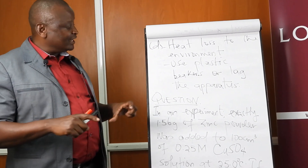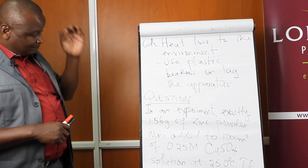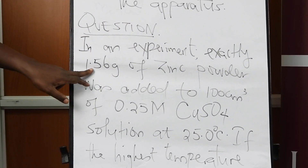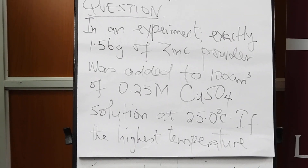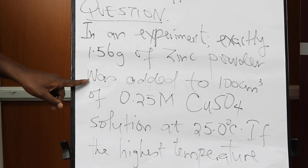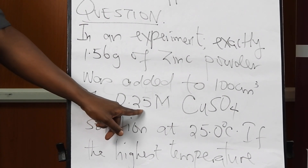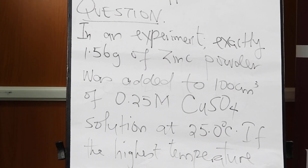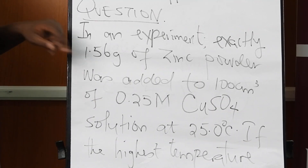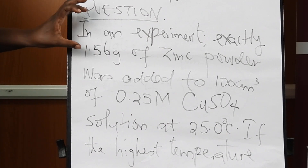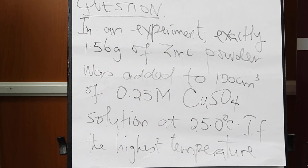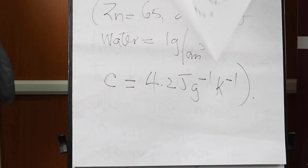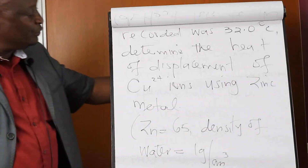This reduces heat loss to the environment to ensure fewer errors in the experiment. There is a follow-up question where an exact amount of zinc is used to displace an exact amount of copper ions from copper sulfate solution — unlike the previous case with excess iron. Please try it out and share your answers on the platform. The constants are provided.